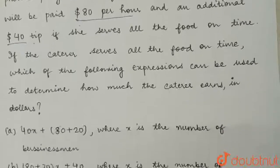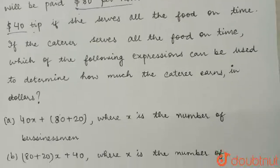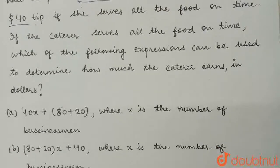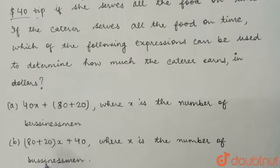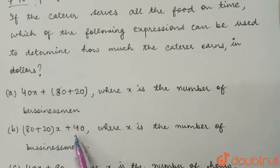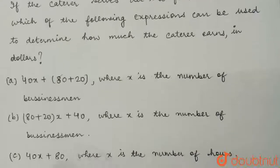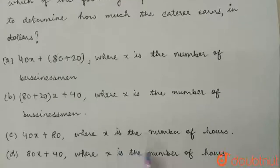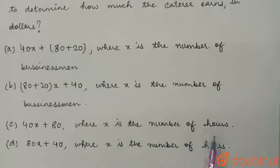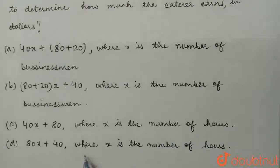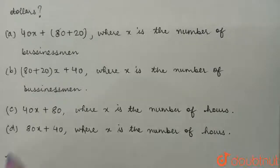The options are: A) 40x + 80 + 20, where x is the number of businessmen; B) 80 + 20 times x + 40, where x is the number of businessmen; C) 40x + 80, where x is the number of hours; and D) 80x + 40, where x is the number of hours.